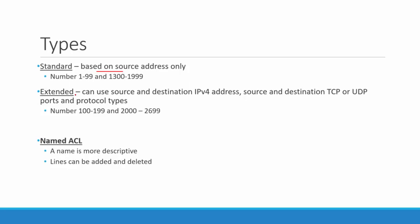With an extended ACL, we can use source and destination IP address, source and destination TCP or UDP ports, and protocol types. The numbers for extended ACLs are 100 to 199 and 2000 to 2699. I can also do a named access control list, as we'll see in a little bit. A name is a little more descriptive, so if I name it, that allows me to kind of know what this ACL is supposed to be doing — not to say I couldn't write a description in there, but it is a little more descriptive.